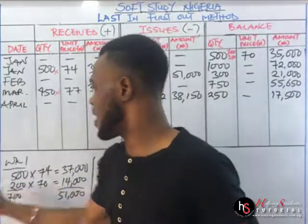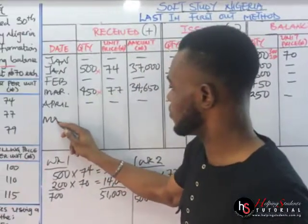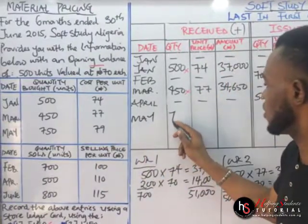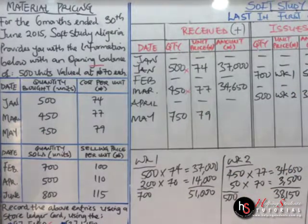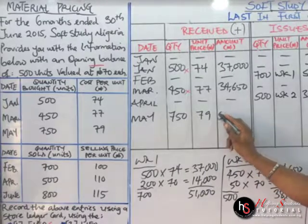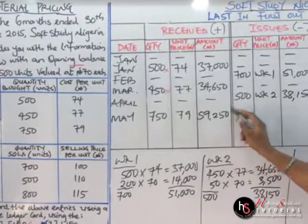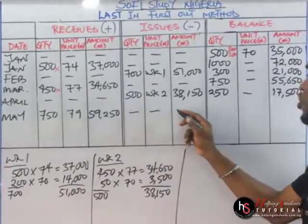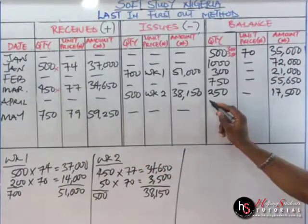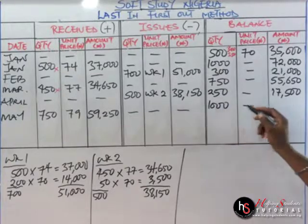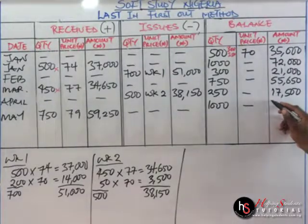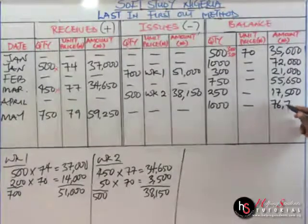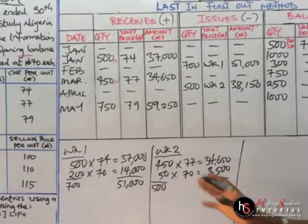We are done with April; we'll proceed to May. May is 750 units at 79 Naira. When we multiply these two values, it gives us 59,250. Under issues, there are no transactions. So the balance becomes: 250 plus 750 = 1,000 units, and 59,250 plus 17,500 = 76,750 Naira.